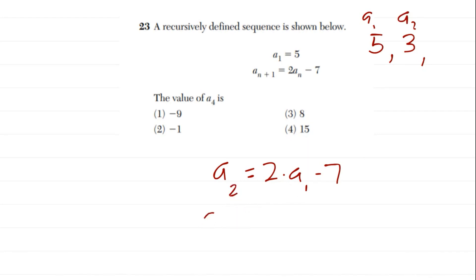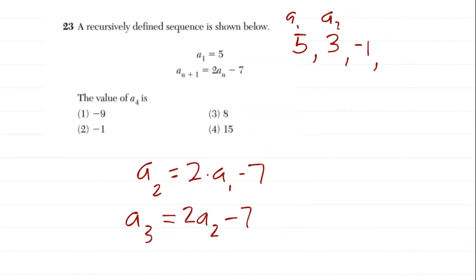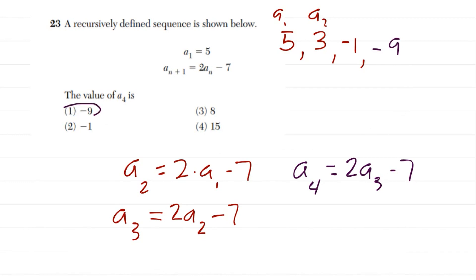To find a sub 3: a sub 3 equals 2 times a sub 2 minus 7. We just found a sub 2 is 3, so that's 2 times 3 minus 7, which equals 6 minus 7, giving us negative 1. Then for a sub 4 — exactly what we're looking for — a sub 4 equals 2 times a sub 3 minus 7. A sub 3 is negative 1, so 2 times negative 1 is negative 2, minus 7 gives us negative 9. That's the answer.